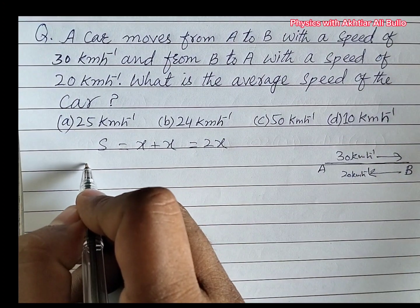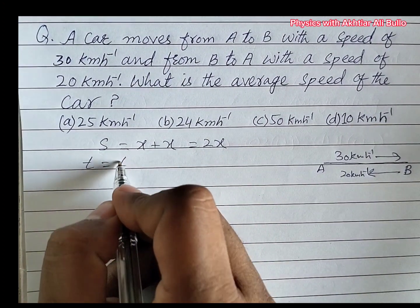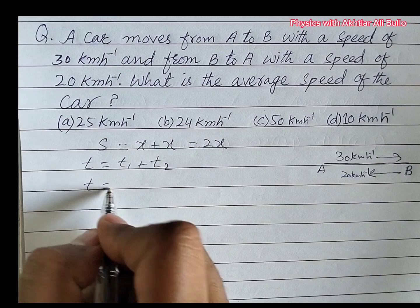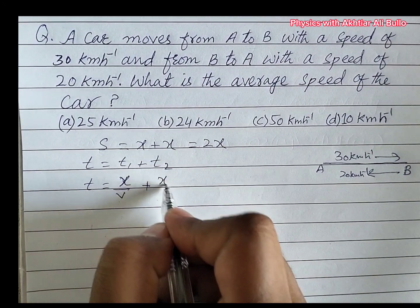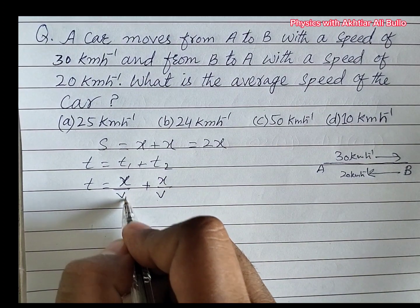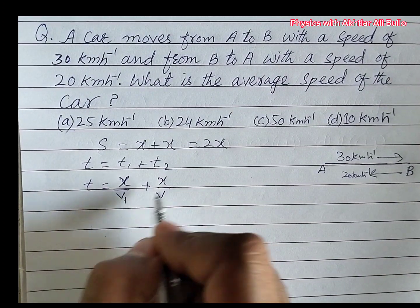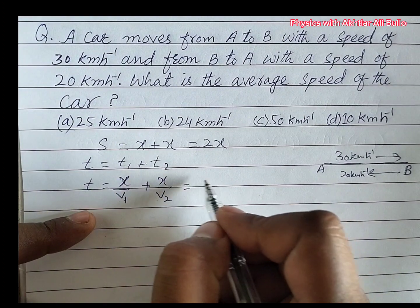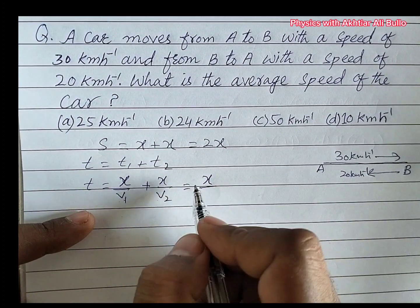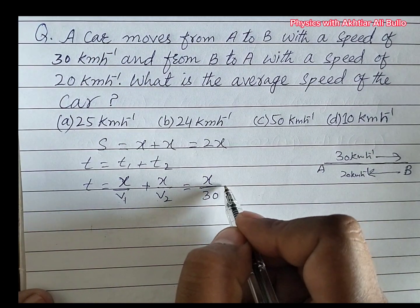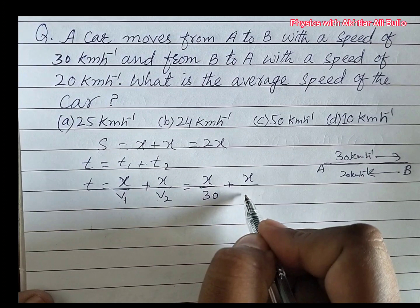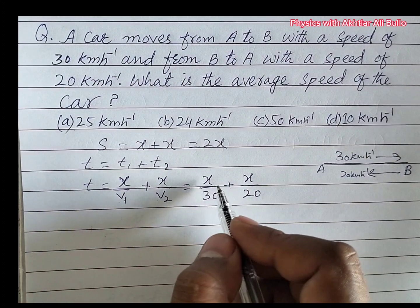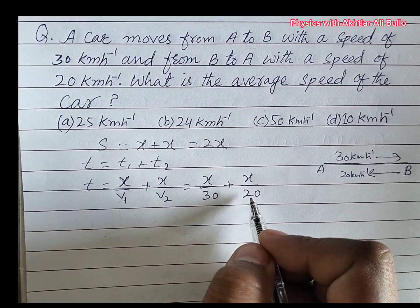Now, total time is equal to T1 plus T2. So T is equal to x upon V1 plus x upon V2. So V1 is 30, x upon 30 plus x upon V2. V2 is 20. So the total time obtained is x upon 30 plus x upon 20.